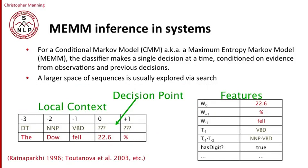So what we're going to do with our maximum entropy models is we're going to put them into a sequence model. And these are usually referred to as maximum entropy Markov models, MEMMs, or conditional Markov models. So what the classifier does is it makes a single decision at a time, but it's able to be conditioned on evidence, both from observations and from previous decisions.